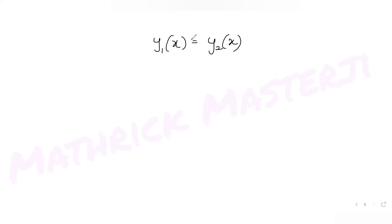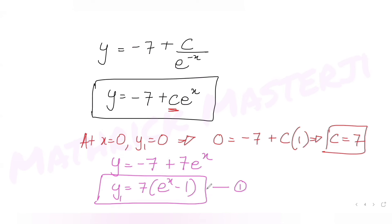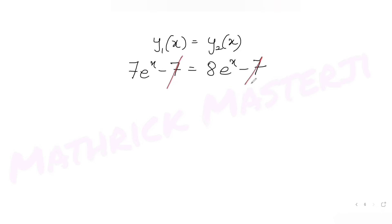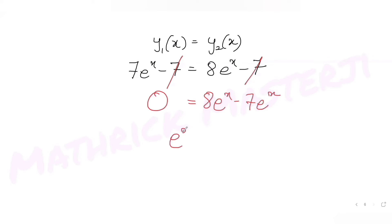To find the intersection points of y1 and y2, I equate them: 7e^x − 7 = 8e^x − 7. The −7 cancels on both sides, leaving 7e^x = 8e^x, which simplifies to e^x = 0.